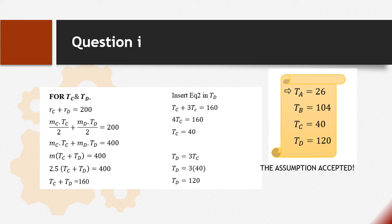To find TC, we insert equation 2 in TD, so TC plus 3TC equals 160. The final answer of TC is 40. To find TD, we use equation 2: TD equals 3TC. TC is replaced by 40, which is the value we got from the above equation, so TD equals 120.